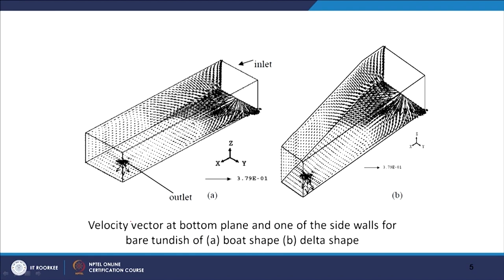To solve these equations, the flow is treated as turbulent. You solve the appropriate equations, and for the k-epsilon turbulence model you solve two extra equations for k and epsilon. You can use any other turbulence model. Ultimately you also solve the concentration equation for the pulse input analysis, to get the tracer concentration during the pulse input. Solving these equations first gives you the steady-state velocity field inside the tundish.